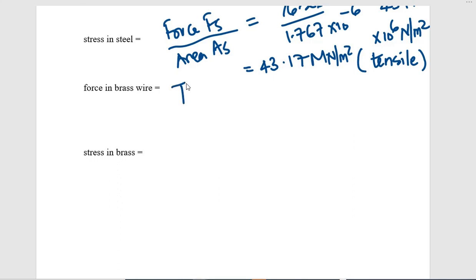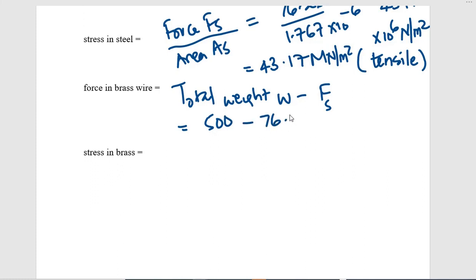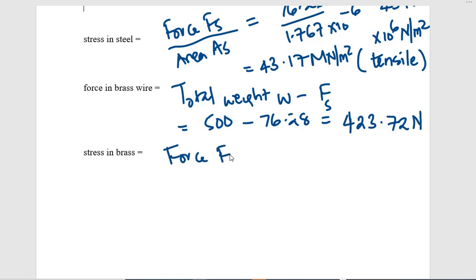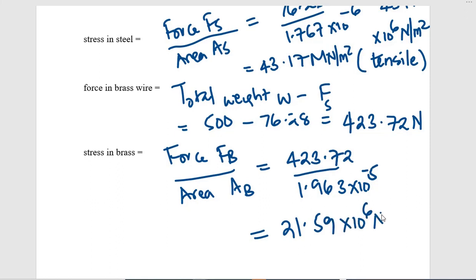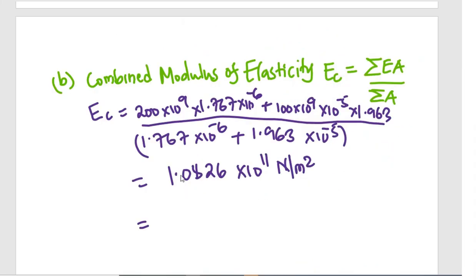The force in brass FB equals the total weight W minus the force in steel FS: 500 minus 76.28 = 423.72 newtons. The stress in brass (σB) equals FB divided by AB, which is 423.72 divided by 1.963 × 10⁻⁵, giving 21.59 × 10⁶ N/m², or 21.59 MPa. That is the stress sigma B in brass. Now let us continue with Part B.